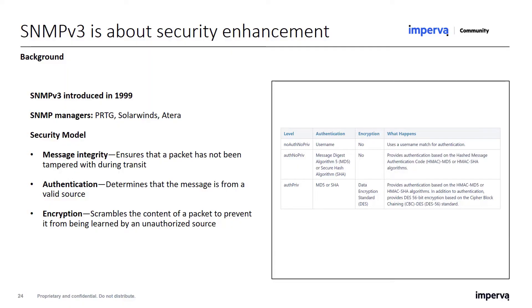What's different in version 3 compared to the previous versions 1 and 2c? Version 1 was the initial version, and version 2c was the enhanced community-based version that required the community string to match on both the management server and the agent side. The weakness of the SNMP protocol was security — the community string in version 2 is sent as clear text, so it's easy to intercept and retrieve all the information from devices on the customer's network.